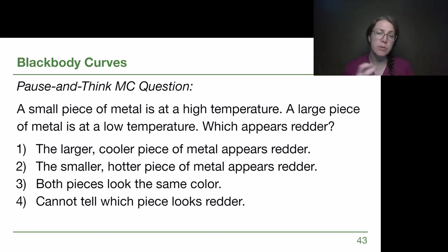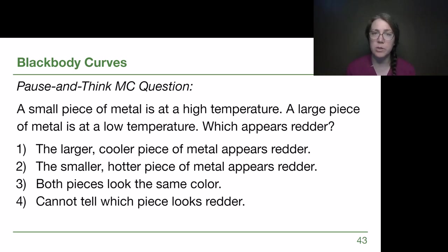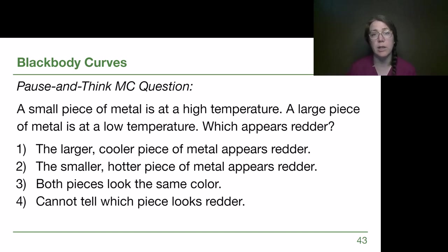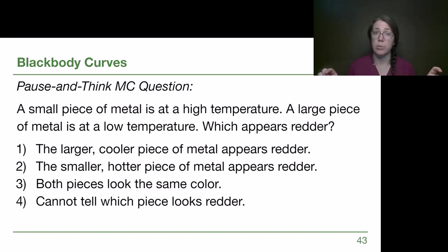We need to pull a couple of different pieces of information from this video and the previous video. When we think about red versus blue, the previous video helped us think through the fact that redder colors are on the lower energy side of the electromagnetic spectrum, and bluer colors — blue and violet — are on the higher energy side when we're thinking about visible light.